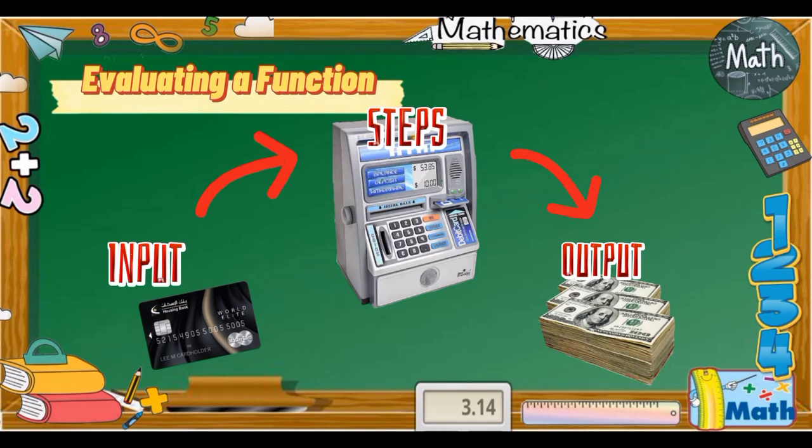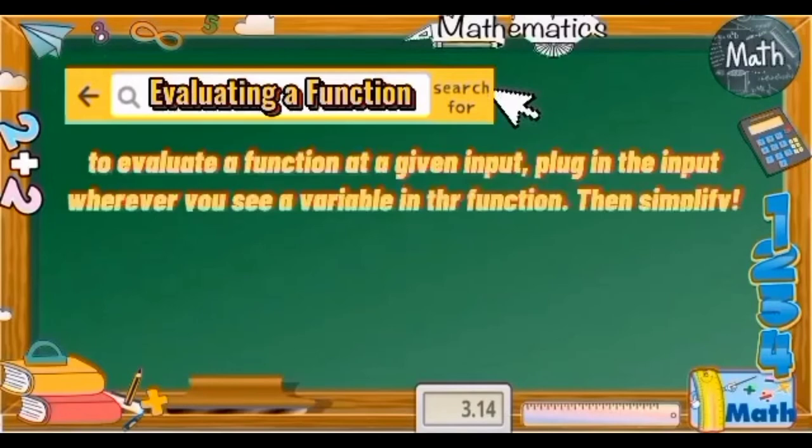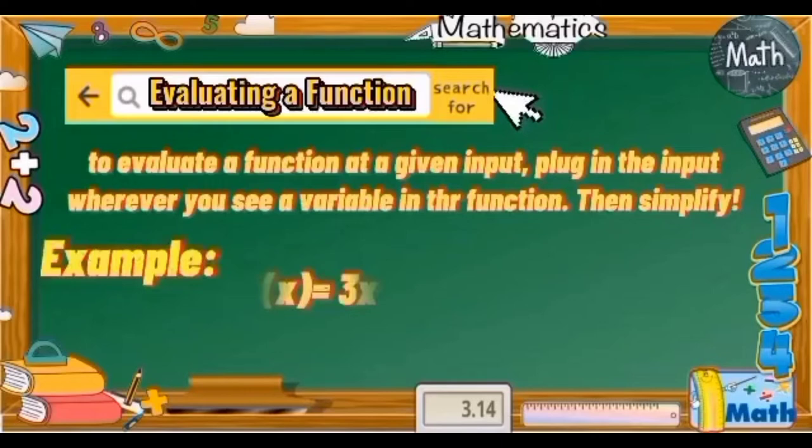This is similar to an ATM machine — before getting the money, we need to put the ATM card in the machine and wait for the process. To evaluate the function at the given input, you must plug in the input wherever you see a variable in the function, then simplify.